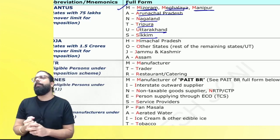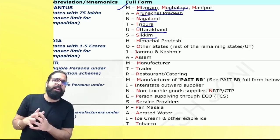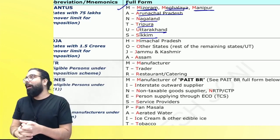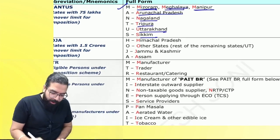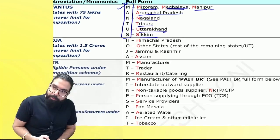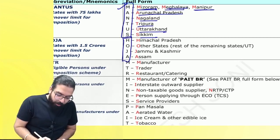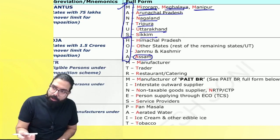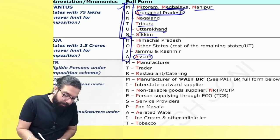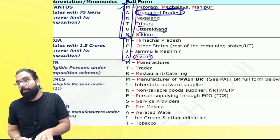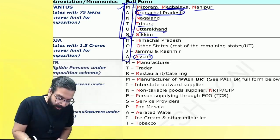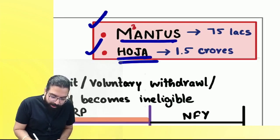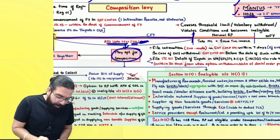So M-cube is Manipur, Mizoram, Meghalaya. A for Arunachal, N for Nagaland, T for Tripura, U for Uttarakhand, S for Sikkim — for these MANTAS states, 75 lakh is applicable. Then HOJA: H for Himachal, O for other states, J for Jammu and Kashmir, A for Assam. MANTAS is a long word so Himachal — a longer name — is included in MANTAS. HOJA is a small word. MANTAS means 75 lakh; HOJA means 1.5 crore.